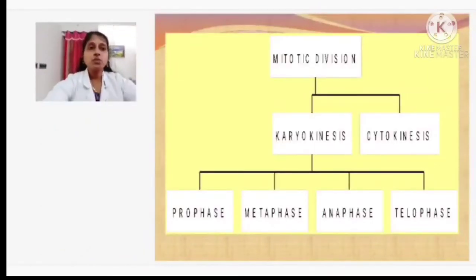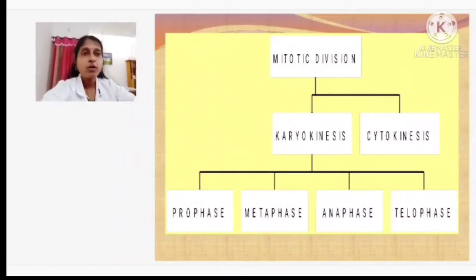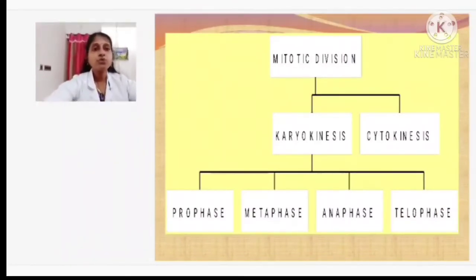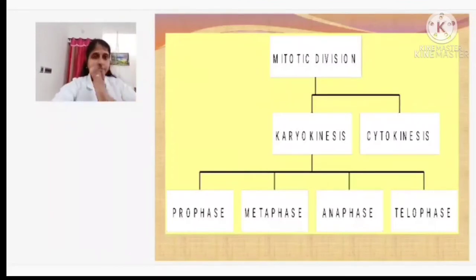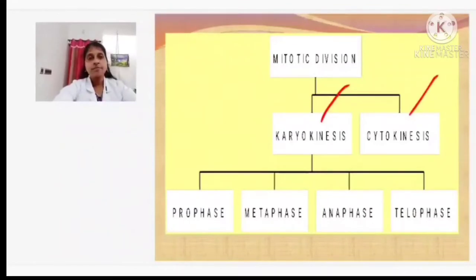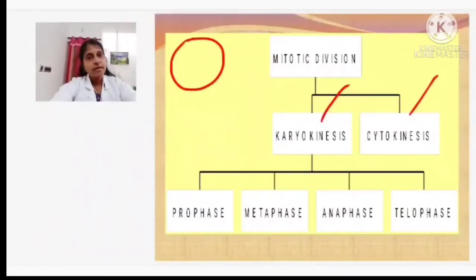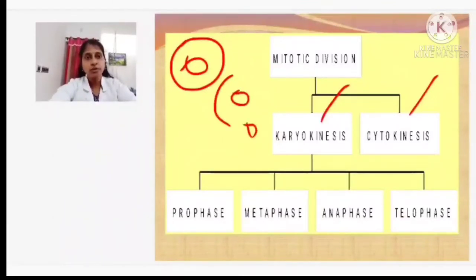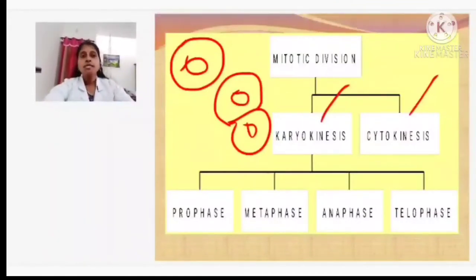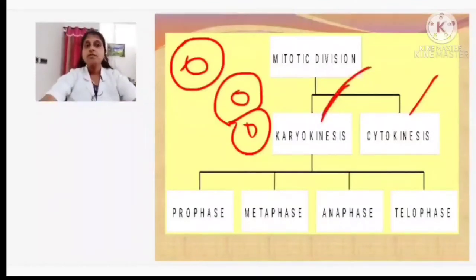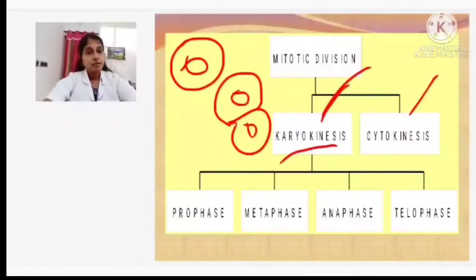The mitotic division is divided into two parts: karyokinesis and cytokinesis. When a cell divides, the nucleus divides first — that is karyokinesis. Then the cytoplasm divides — that is cytokinesis. Nuclear division is divided into four stages: prophase, metaphase, anaphase, and telophase.